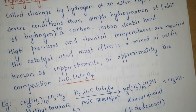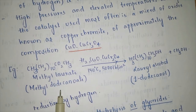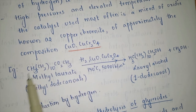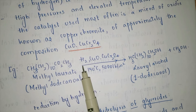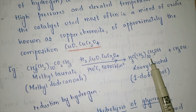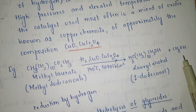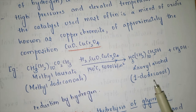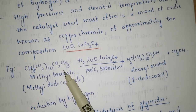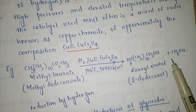A common catalyst used in hydrogenolysis is copper chromate, with composition CuO·CuCr₂O₄. Taking methyl laurate (methyl dodecanoate) as an example — an ester of a fatty acid — in the presence of hydrogen and copper chromate at 150°C and 5000 lb pressure, the ester is converted to its respective alcohols. Methyl dodecanoate is converted to 1-dodecanol (lauryl alcohol) and methanol.